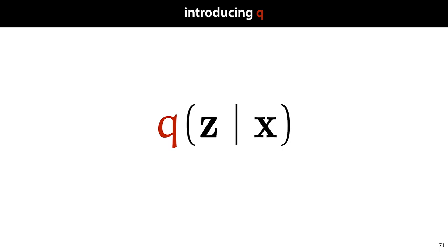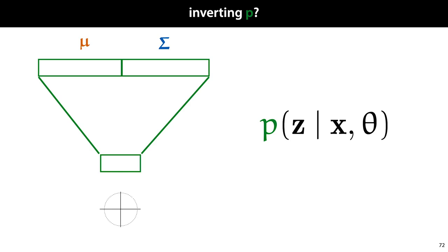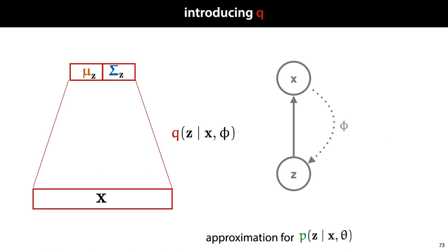The solution is to introduce a new distribution q, which tells us for a given x, which values of z are most likely. For the Gaussian mixture model, for a given choice of parameters for p, we could easily work out the distribution on z conditioned on x, and this gave us a good choice for q. In our case, things aren't so easy. To work out the conditional distribution on z given x under the model p, we would need to invert the neural network — to work out for a particular output x, which input values z are likely to have caused that output. This is not impossible, but it's a costly and imprecise business. As we did with GANs, it's best to introduce a network that will learn the inversion for us, and this is the network we call q.